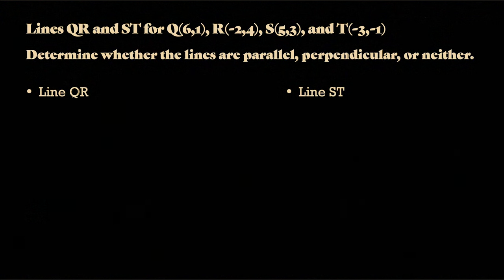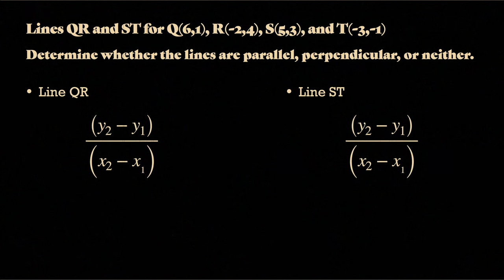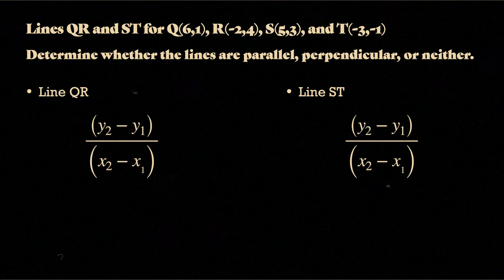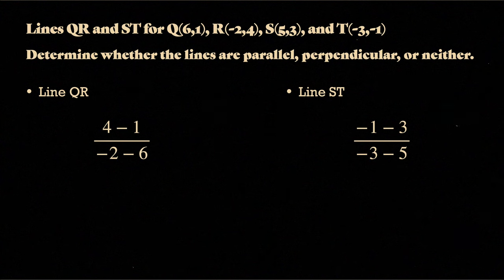All right, so now we're going to be talking about lines QR and ST, where Q is at 6, 1. R is at negative 2, 4. S is at 5, 3. And T is at negative 3, negative 1. So like before, we have to plug it into our values. So 4 minus 1, negative 2 minus 6, negative 1 minus 3, and negative 3 minus 5.